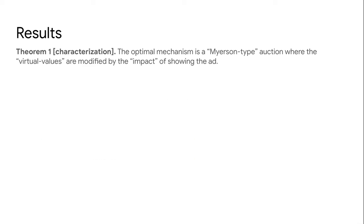Our first result shows that Myersonian theory still holds: the optimal auction in this setting still uses virtual values, but these virtual values are modified by the impact of showing an ad.